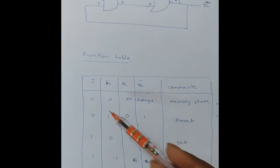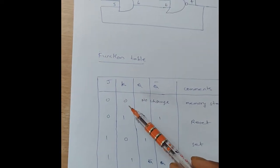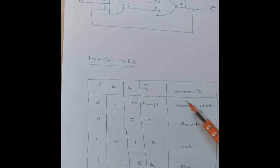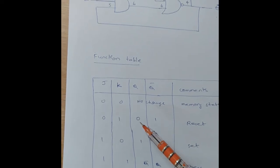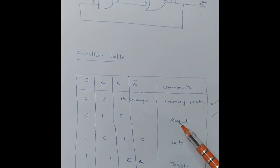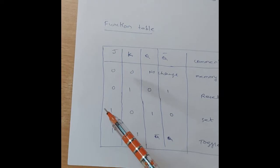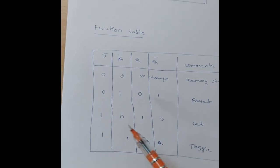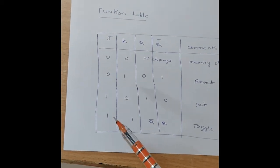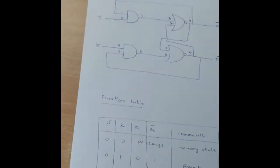This is the function table of the JK latch. J and K are the inputs, Q and Q-bar are the outputs. First combination 00: output is no change — this is the memory state. Input 01: outputs are 01 — reset condition. Input 10: outputs are 10 — set condition. Last combination 11 is the toggle condition.